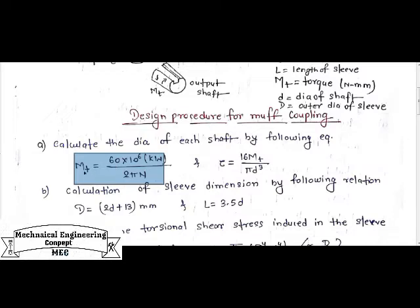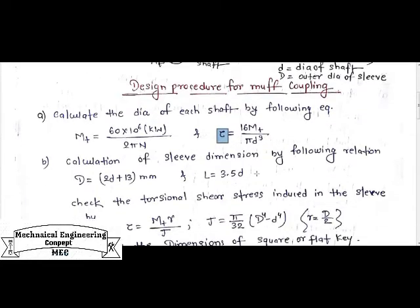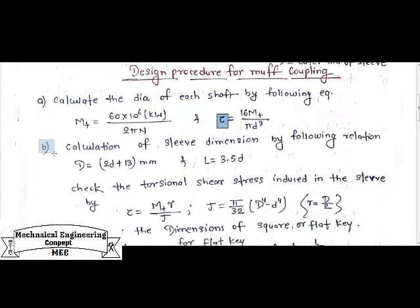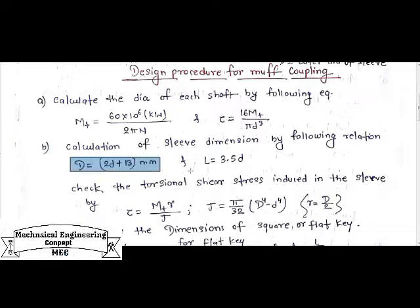Here we can calculate the value of MT from the basic power-torque-speed relation. In a problem, we always know the basic value of shear stress, and with the help of τ = 16MT/(πD³) we can calculate the diameter of the shaft. In Step B, we can calculate the sleeve dimensions: the outer diameter of the sleeve or MOF equals 2 times the diameter of the shaft plus 13 mm, and the length L equals 3.5 times the shaft diameter.